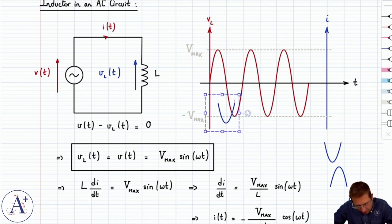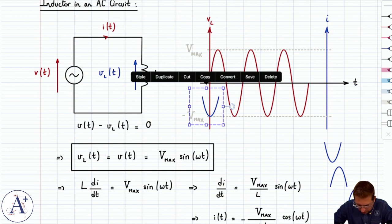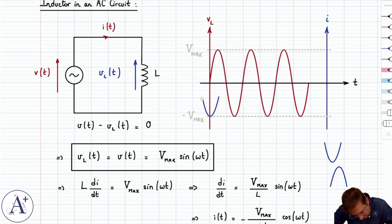Well, minus cosine of ωt is going to be equal to minus 1 when t equals 0. So our graph is going to look like this at t equals 0.